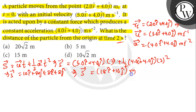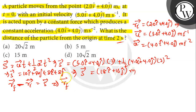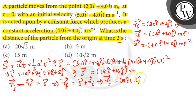We know that the displacement vector is given by rf vector minus ri vector equals s vector. So the final position vector is given by rf vector equals s vector plus ri vector. Therefore, rf vector equals 18 i cap plus 16 j cap plus 2 i cap plus 4.0 j cap.